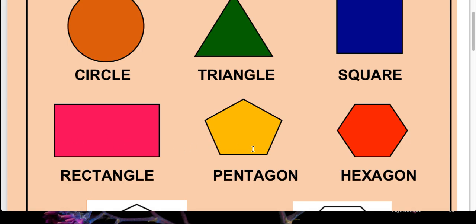Next is pentagon. Yeh dekhi, yeh ek naya shape hai — this is a new shape for us. Pentagon is having how many sides? One, two, three, four, five — there are five sides. So the shape which is having five sides is known as pentagon. Pentagon woh closed shape hai jiske five sides hote hai.